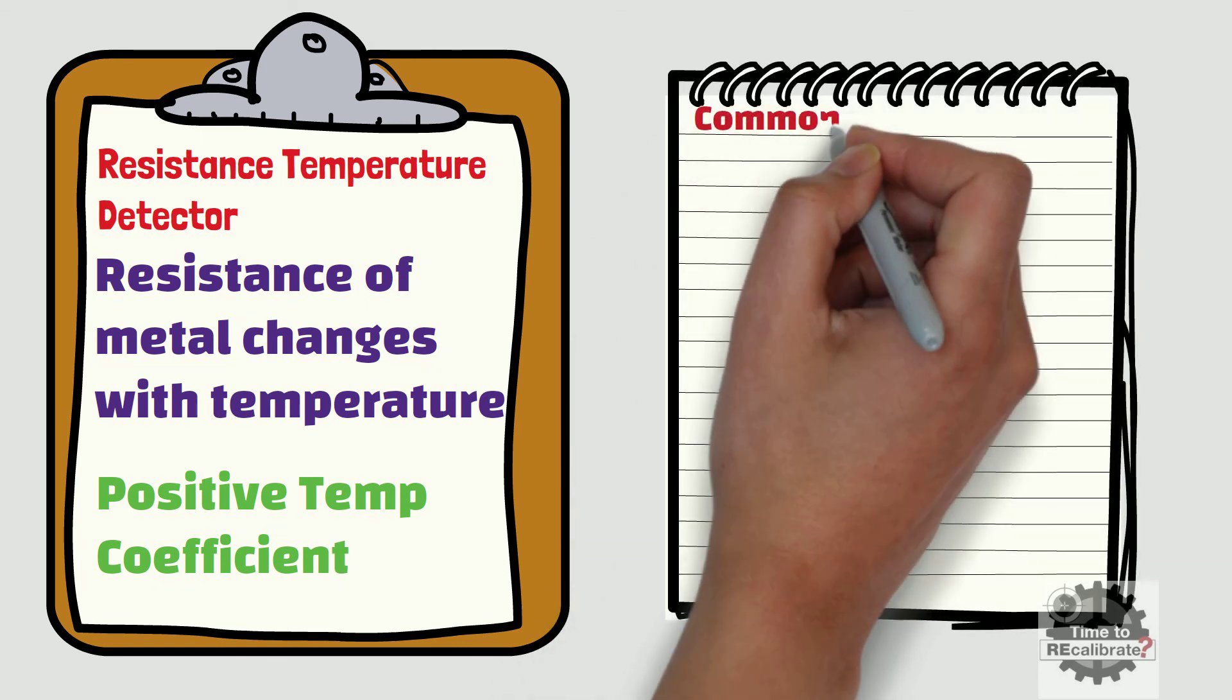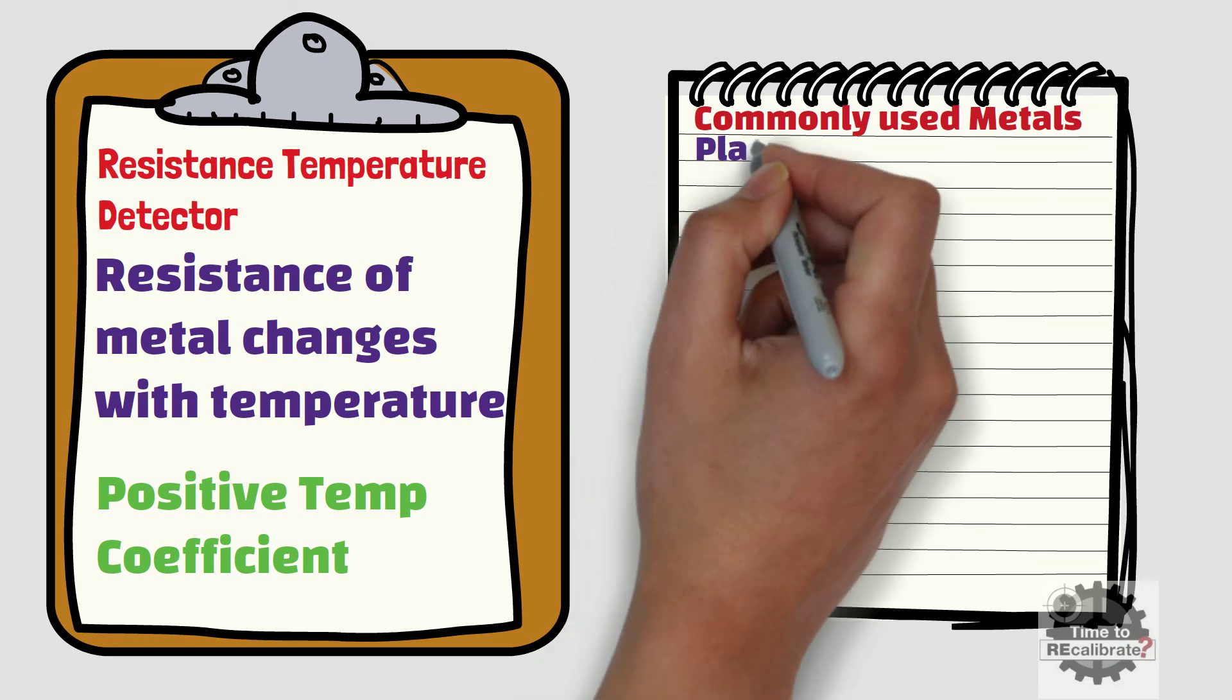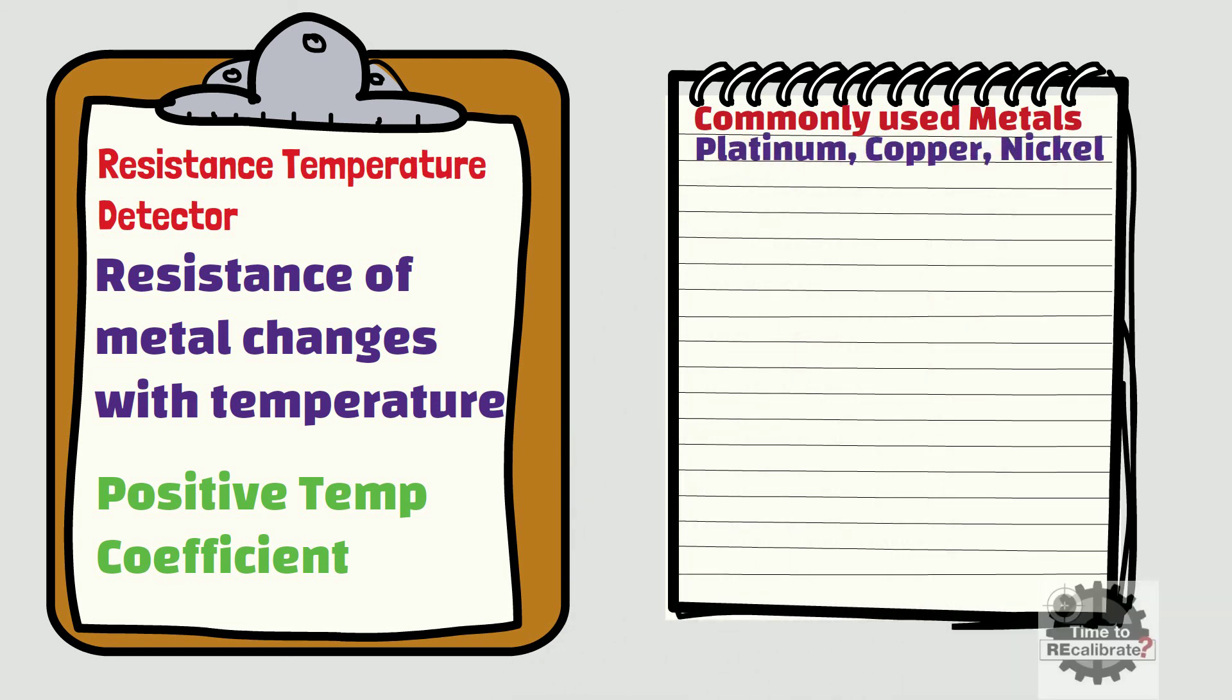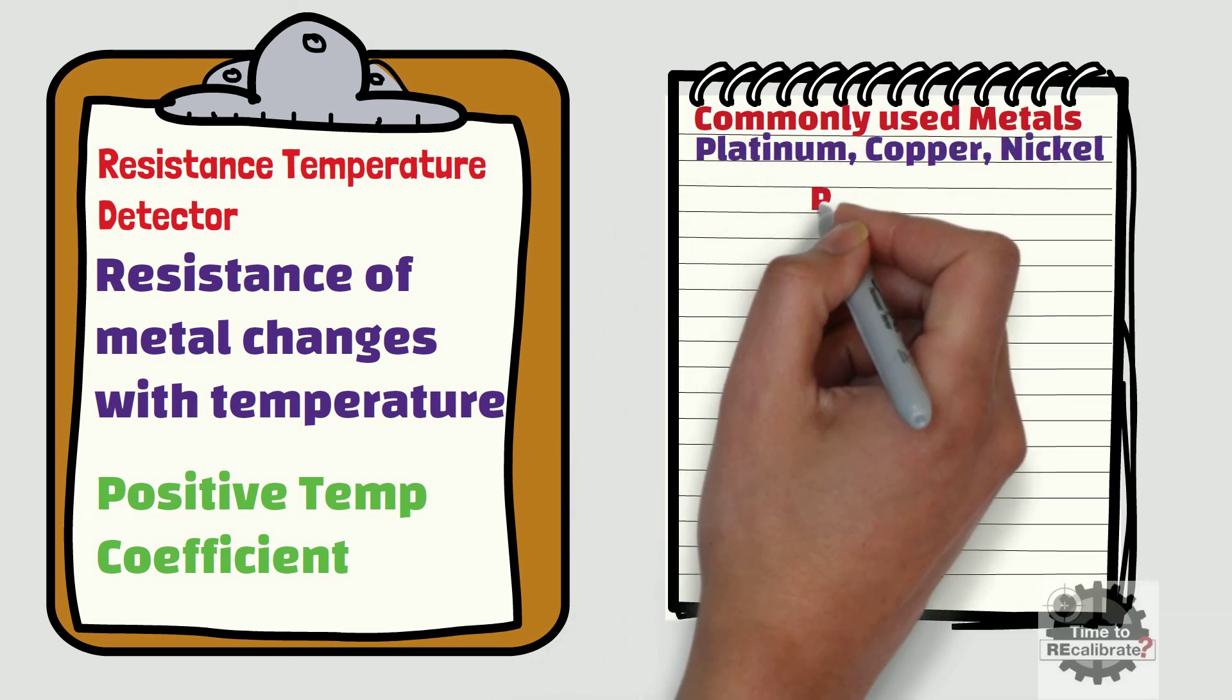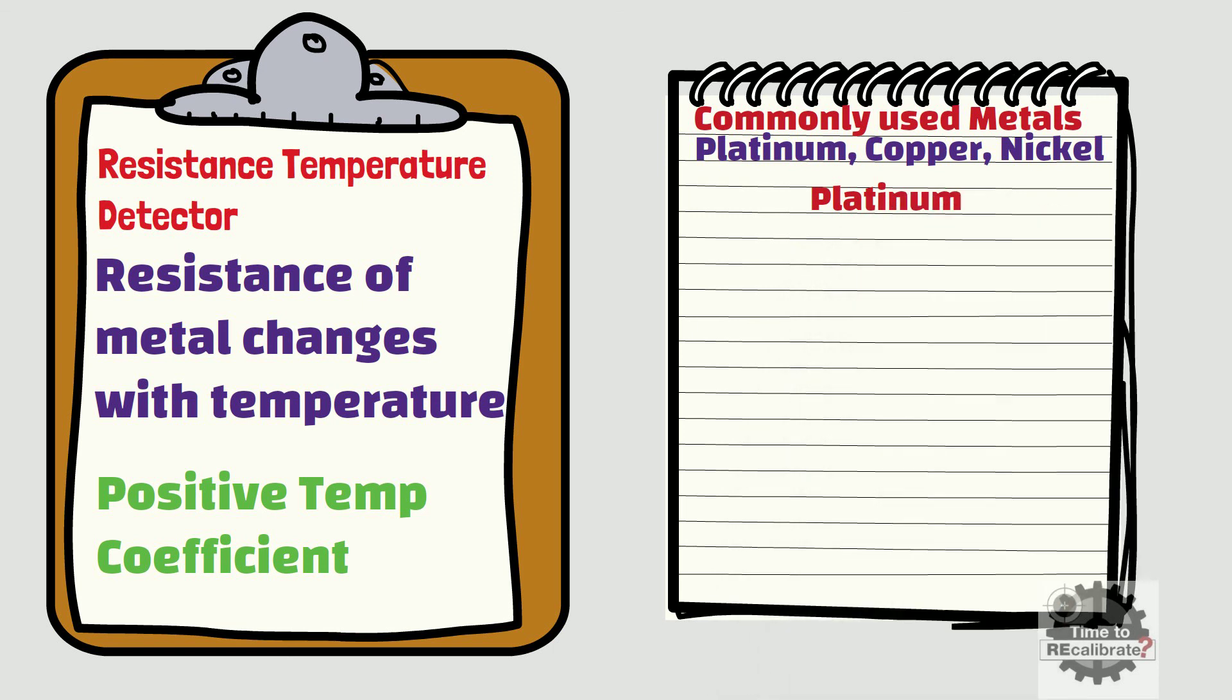The most commonly used metals for RTDs are platinum, copper, and nickel. Among these three metals, platinum is the most commonly used metal for RTD.